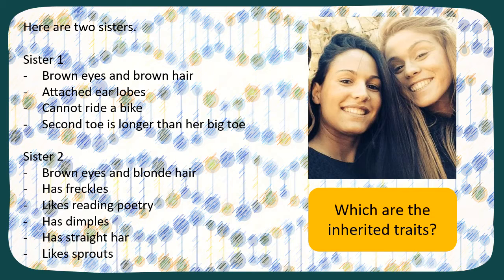Here are two sisters. Sister one has brown hair and brown eyes, and her earlobes are attached — meaning the bottom of the earlobe touches her face rather than hanging away. Sister one cannot ride a bike, and her second toe is longer than her biggest toe. Sister two has brown eyes and blonde hair — these are their natural hair colours. Sister two has freckles, likes reading poetry, has dimples, straight hair, and also likes sprouts.